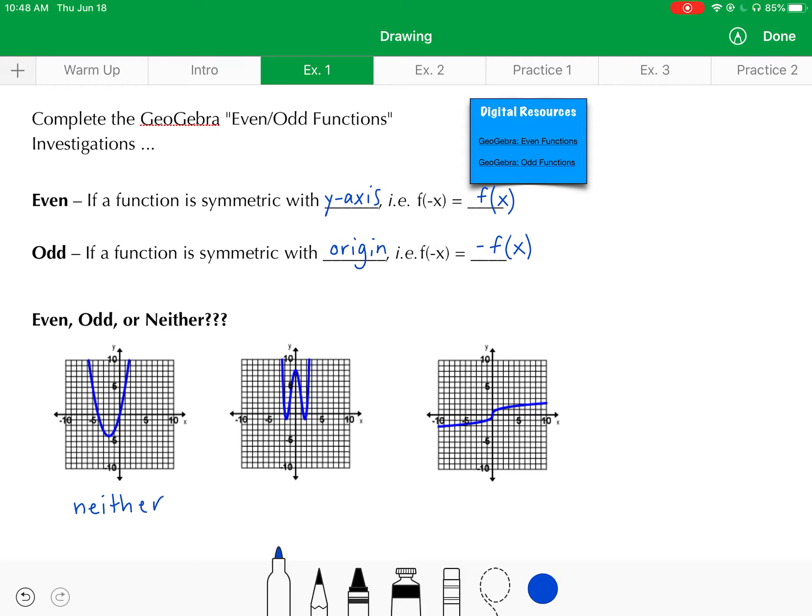Next, in the middle, that graph appears to be symmetric with the y-axis. So that is an even function. And then the third graph on the right, there's definitely symmetry with the origin. So this is an odd function.